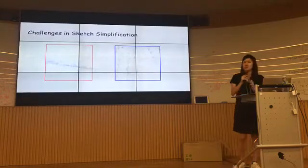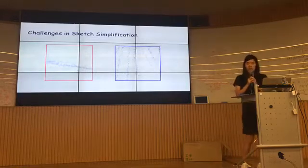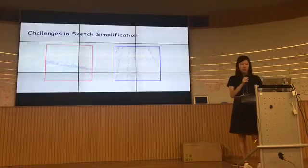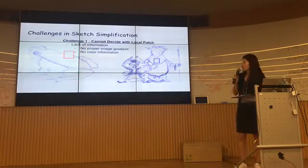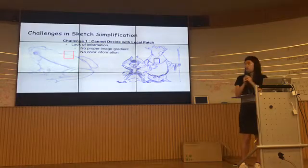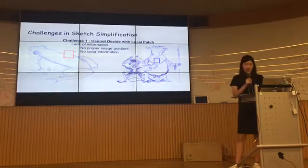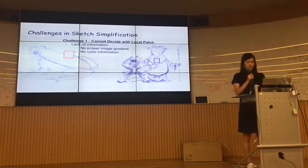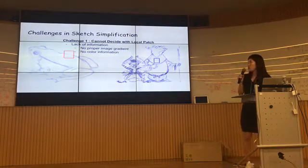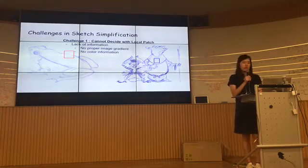Some might think — isn't this just edge detection? Why is it so difficult? You might think we can do this using only one type of filter. The first challenge is there's not much rich information in sketch data, so we cannot decide with a local patch because there is no proper image gradient and no color information as in ordinary natural images.